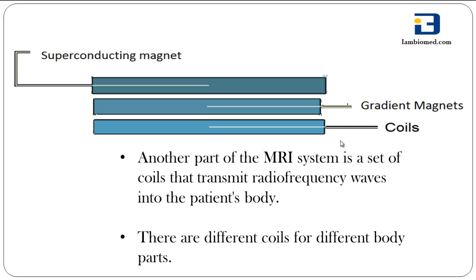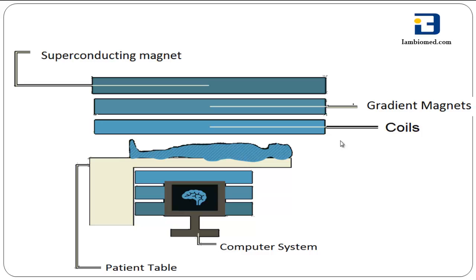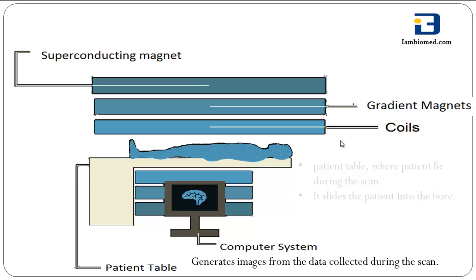Another part of the MRI system is a set of coils that transmit radio frequency waves into the patient's body. The computer system generates images from the data collected during the scan. The patient table is where the patient lies during the scan, and it slides the patient into the bore.